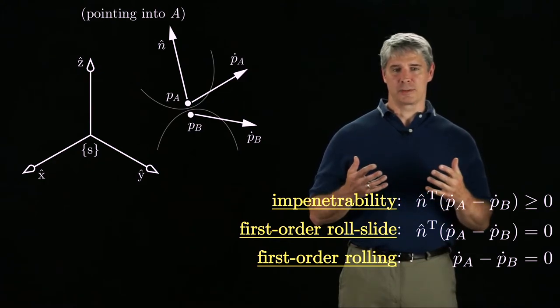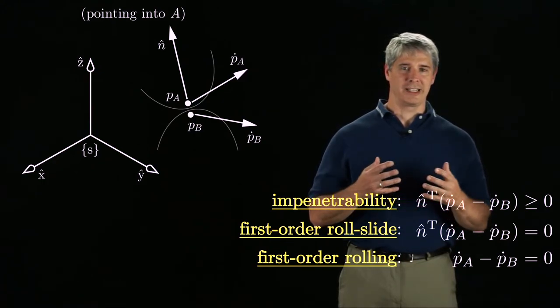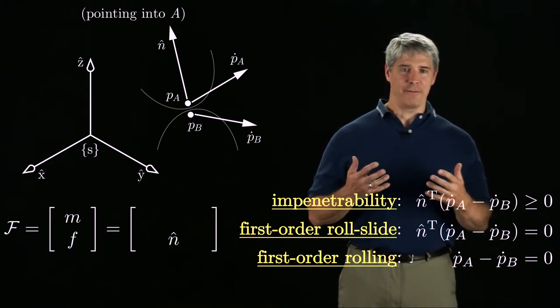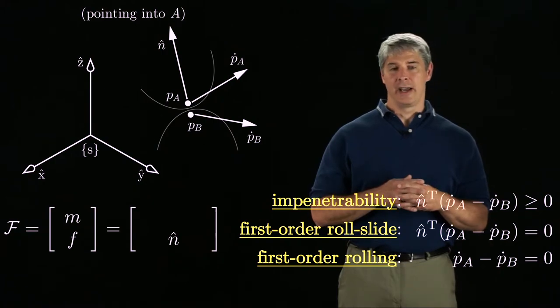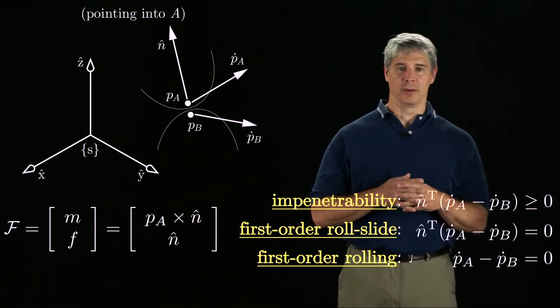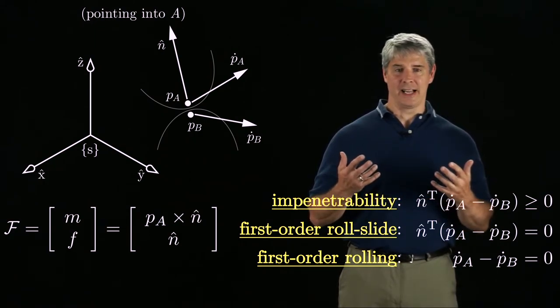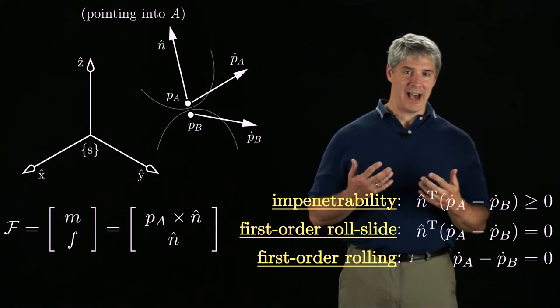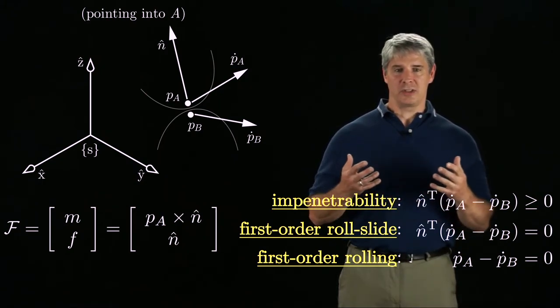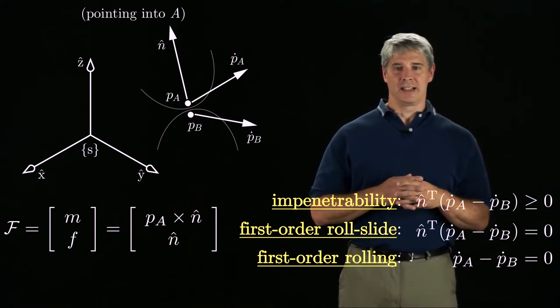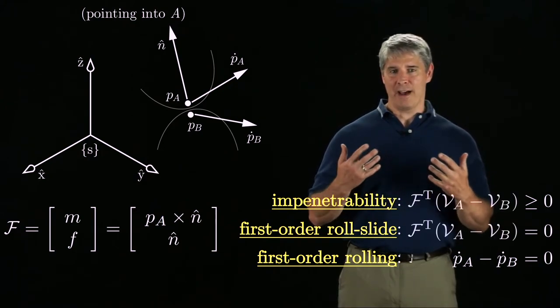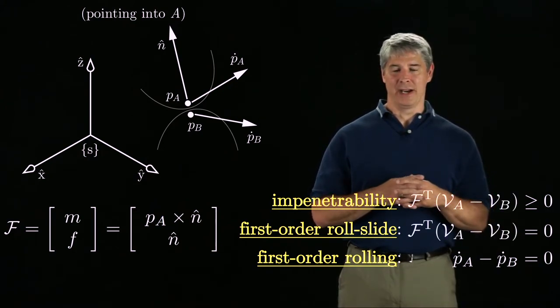It will be convenient to express the impenetrability and roll-slide constraints directly in terms of twists. To do this, let's define a wrench F with a linear component given by the unit normal vector and a moment given by the vector to the contact crossed with the normal. We don't need wrenches for our kinematic analysis, but we use the wrench notation now because we'll see it later when we discuss contact forces. With this notation and a simple derivation, the left-hand sides of the impenetrability and roll-slide constraints can be written as F transpose times VA minus VB.